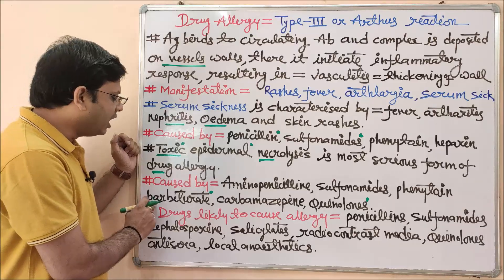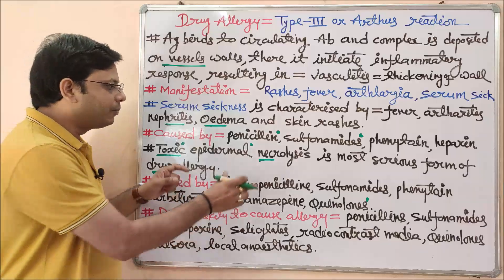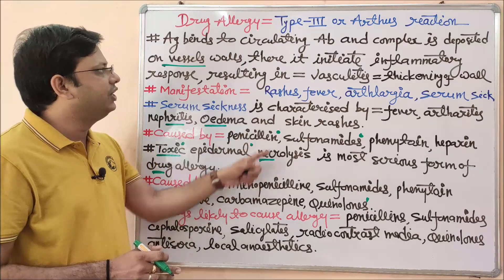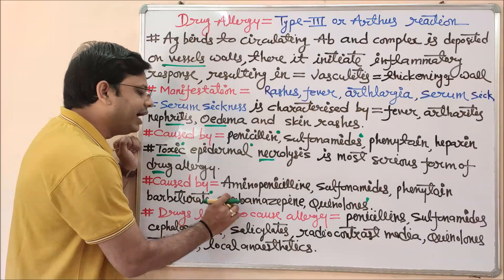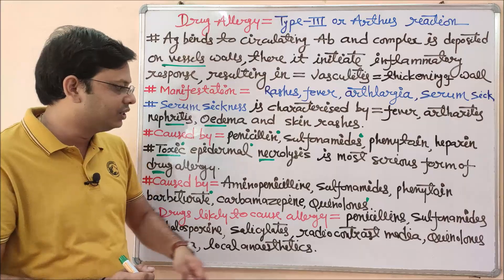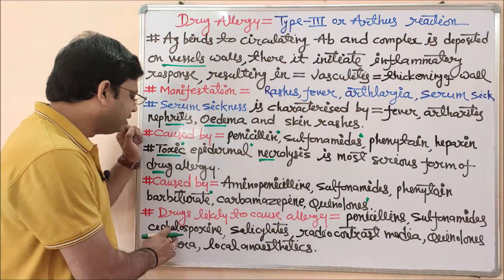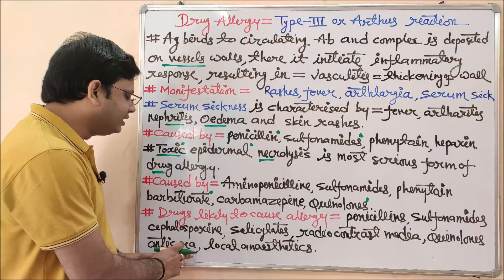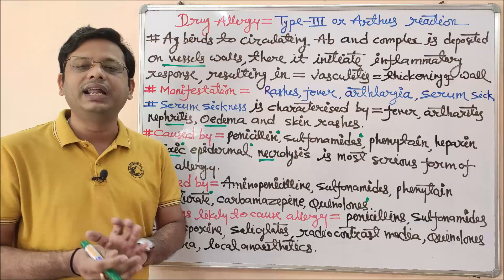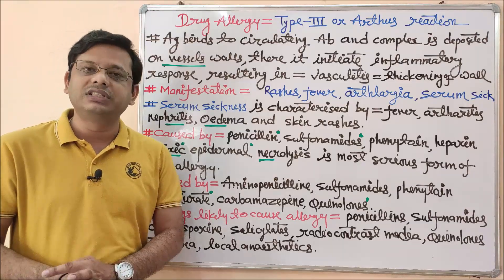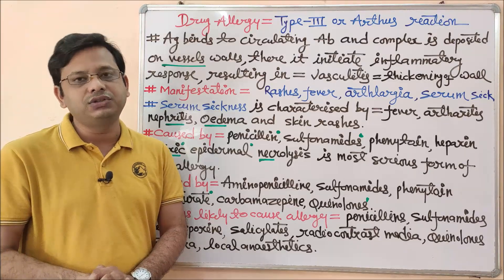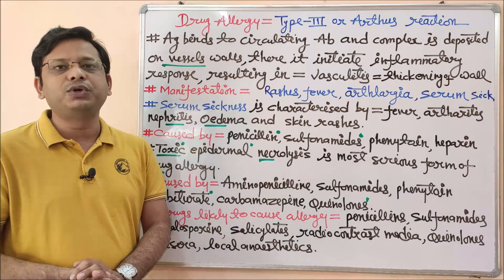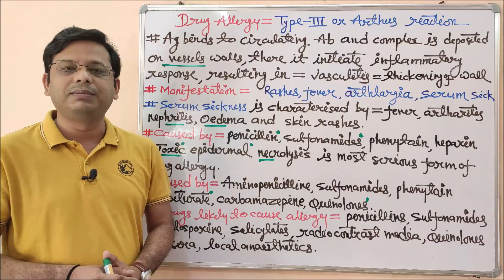Apart from specifically categorized drugs, there are many other drugs which can cause any type of drug allergy. These drugs are common for each type of allergic reaction: penicillin, sulfonamide, cephalosporin, salicylate, radio contrast media, quinolones, antisera, and local anesthetics. These are the drugs which may cause drug allergic response in any susceptible or hypersensitive patient. This was the second and final part of drug allergy. The reference for today's lecture is Padmaja Udaykumar. Thank you for watching. Namaskar, do take care of yourself.